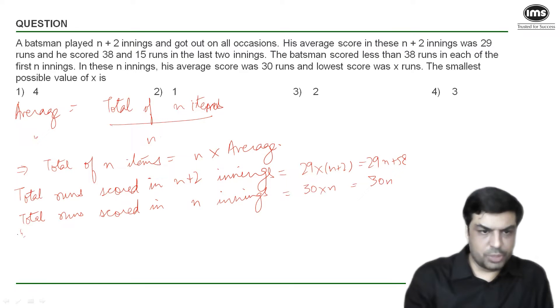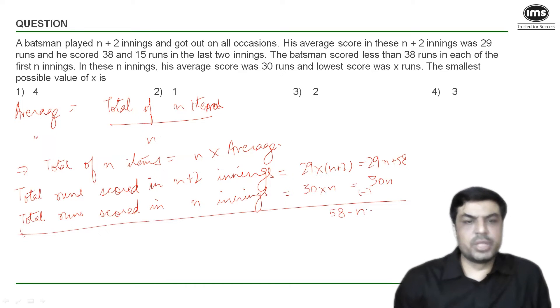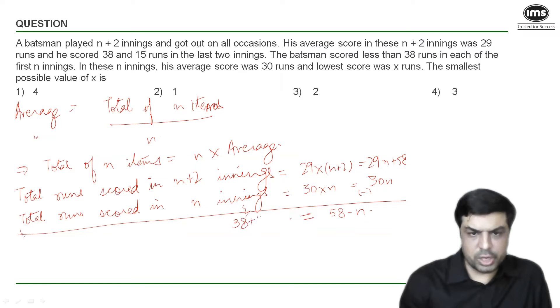What is the difference between these two? So if I just subtract the second one from the first I get 58 minus n. Now logically what is the difference in these two? I am comparing the total after n innings with the total after n plus 2 innings difference is nothing but the runs scored in the last two innings. So I can say that this difference 58 minus n is nothing but the runs scored in the last two innings 38 plus 15 which is 53, which means from here I can say 58 minus n is 53 or n is equal to 58 minus 53 which is 5.